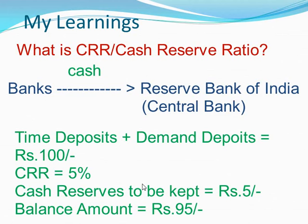If a bank has total time and demand deposits of Rs.100 and CRR is 5%, then that bank has to keep Rs.5 as cash reserves with the central bank, and only Rs.95 are available for lending. Out of this Rs.95, a certain portion has to be invested by the bank in government securities. The balance amount left after investment in government securities can be used by the banks for lending.